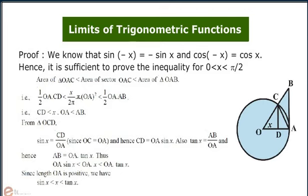Now from triangle OCD, sin x equals to CD by OA, since OC equals to OA. Again tan x equals AB by OA. Thus OA sin x is less than OA into x which is less than OA tan x.